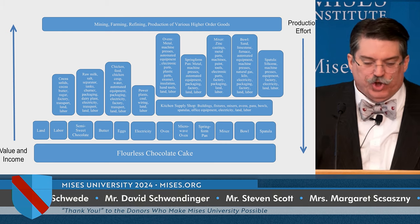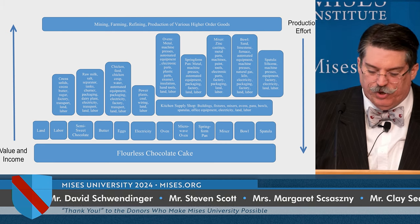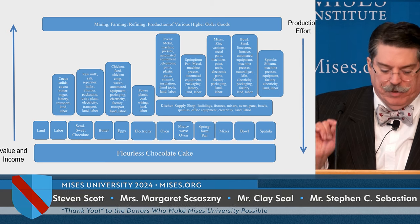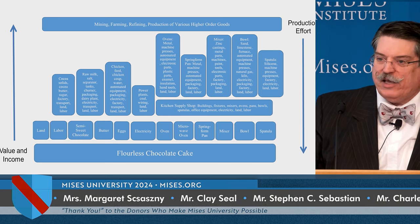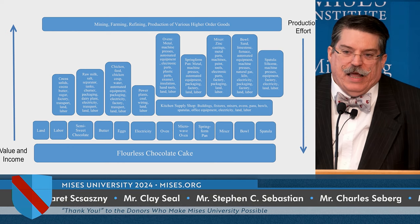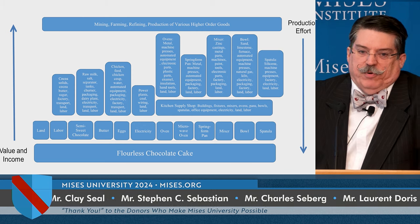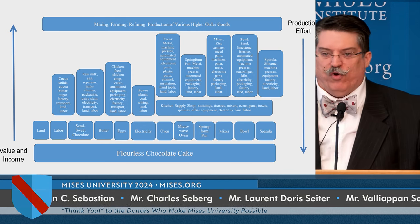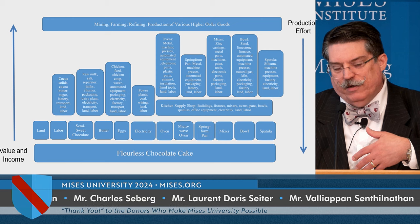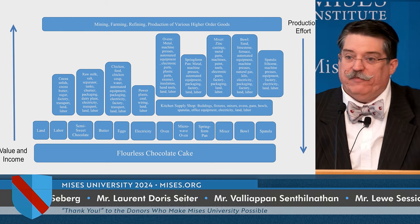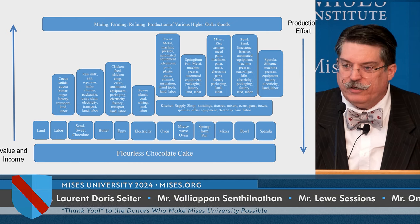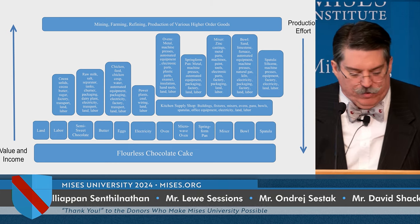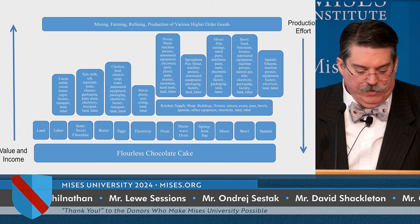At the same time, value is imputed up the structure of production. The chocolate, butter, eggs, mixer, spring-form pan, spatula, and electricity are valued because they can be used in making the flourless chocolate cake, which is valued. If people didn't value the flourless chocolate cake, they would have less reason to value the eggs, butter, semi-sweet chocolate, spatulas, and spring-form pans. So value is imputed up the structure of production.